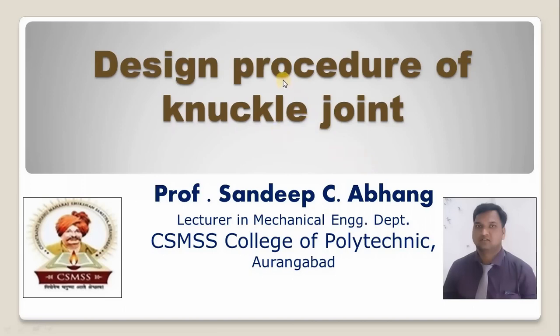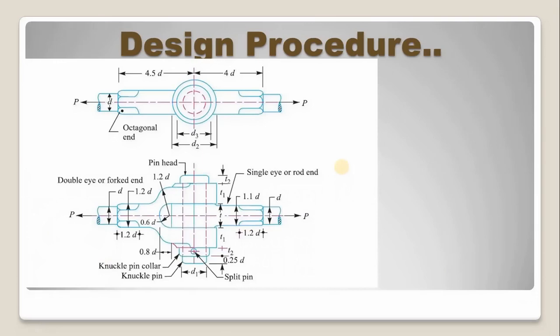Today we are going to learn the design procedure of a knuckle joint. In the last lecture, we have seen what is a knuckle joint and their applications. The two rods are tightened together by means of a knuckle joint and load P is acting on both the rods axially.